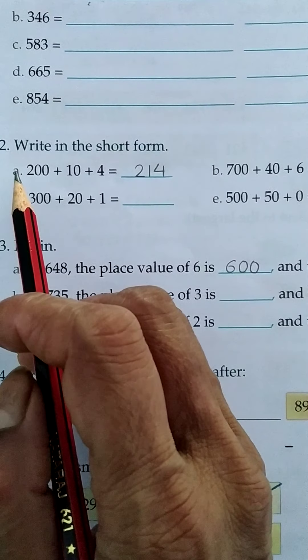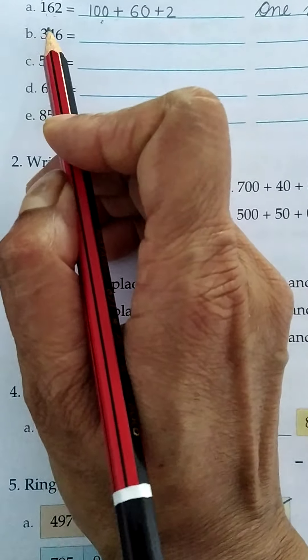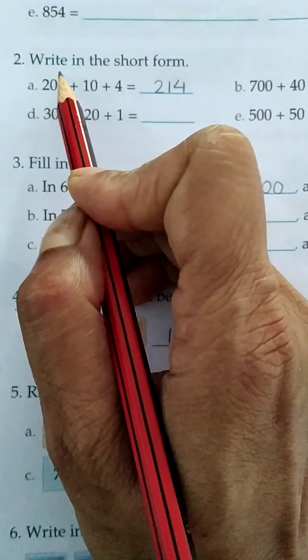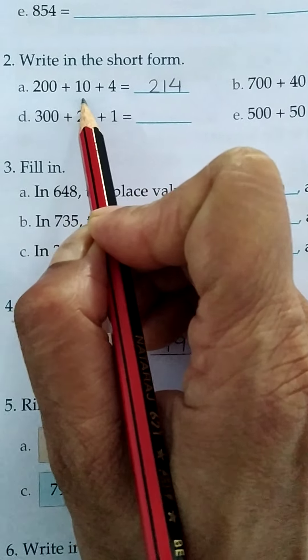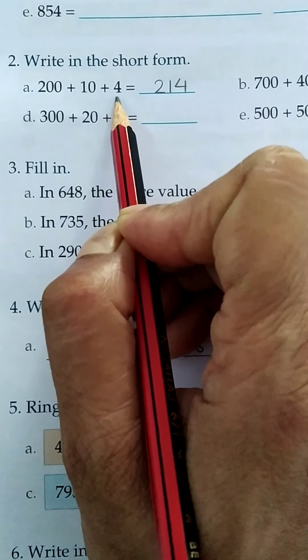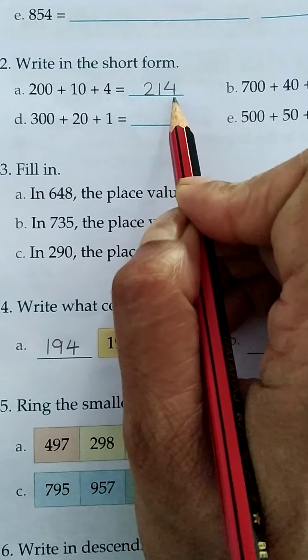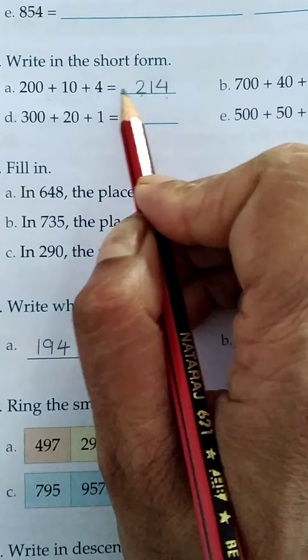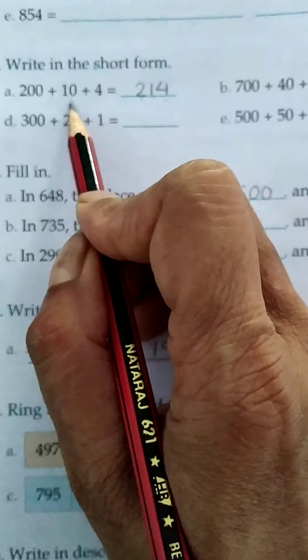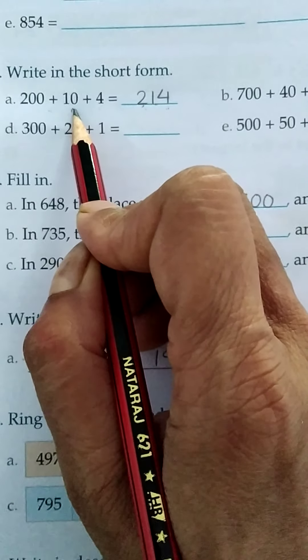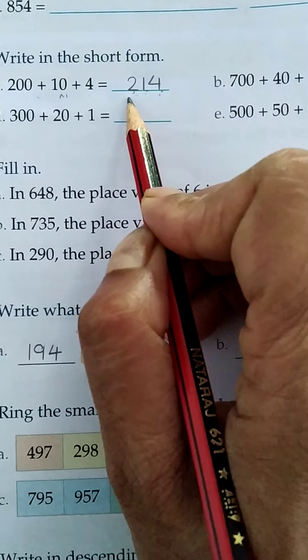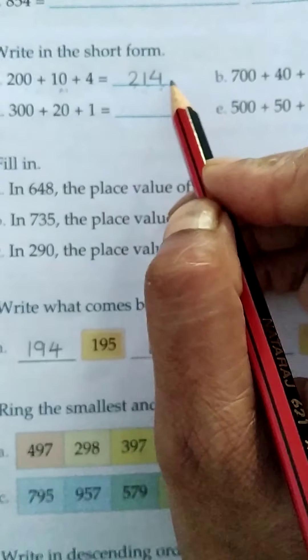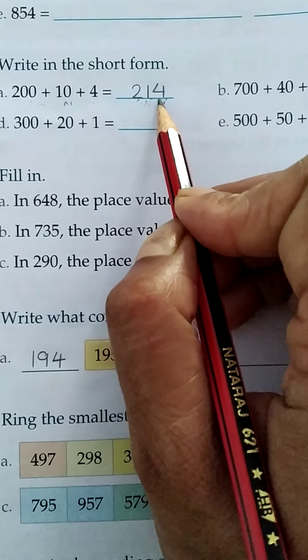Number 2. Write in the short form. Here we wrote the number in long form. In this exercise we have to write the number in short form. The expanded form is given. You have to combine it. So 200 we write 2. Ten means 1 tenth. And 4. It becomes 214. This is the long form and we have to write the number in short form.